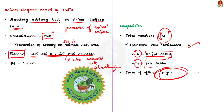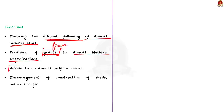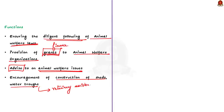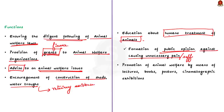The board consists of 28 members, including 6 from parliament — 2 from Rajya Sabha and 4 from Lok Sabha. The term of office of these 28 members is 3 years. Key functions include: ensuring animal welfare laws are diligently followed; providing grants to animal welfare organizations; advising the government of India on animal welfare issues; encouraging construction of sheds and water troughs for veterinary assistance; imparting education on humane treatment of animals; and encouraging public opinion against inflicting unnecessary pain or suffering on animals.